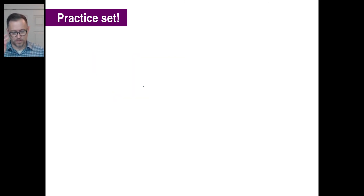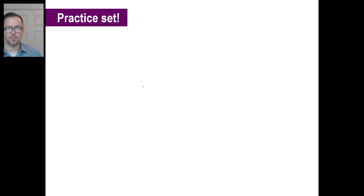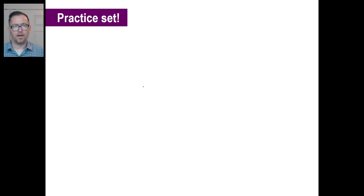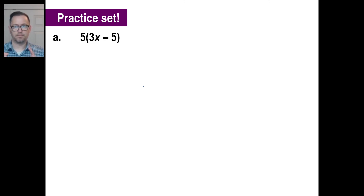Let's work on the practice set. Go ahead and pause it and try A. A is 5 times the sum 3X minus 5: 5(3X − 5).